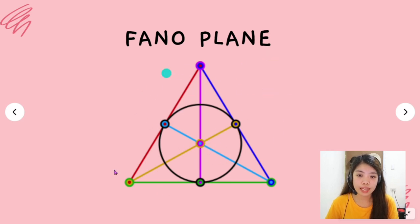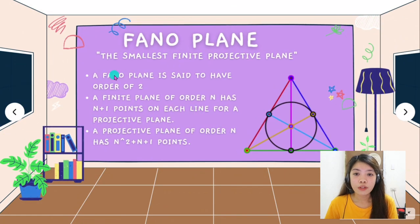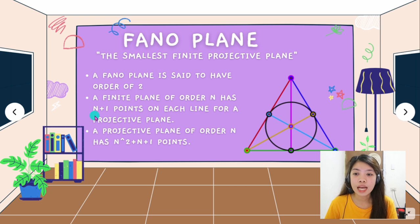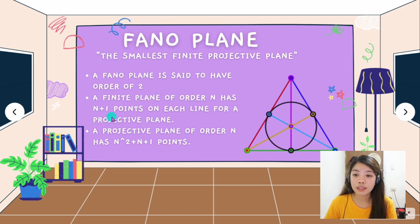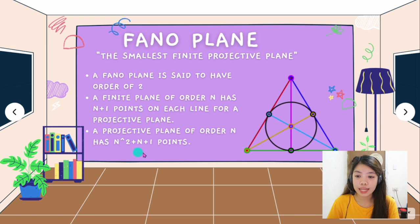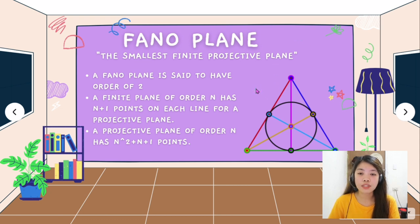To sum up the Fano Plane: it is defined as the smallest finite projective plane with an order of 2. A finite plane of order N has N plus 1 points on each line. Since the Fano Plane has order 2, substituting gives 2 plus 1 equals 3, so each line has 3 points. A projective plane of order N has N squared plus N plus 1 points in total. For the Fano Plane: 2 squared plus 2 plus 1 equals 7, which confirms that the Fano Plane has 7 points in total.